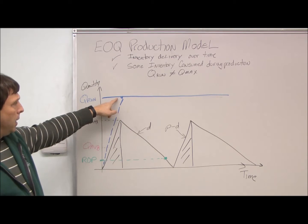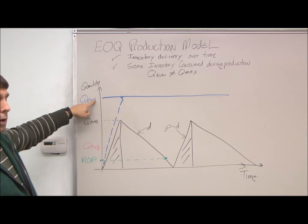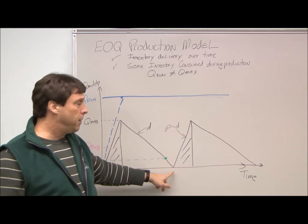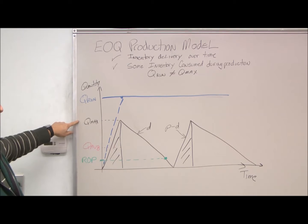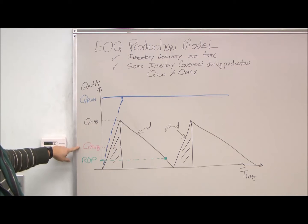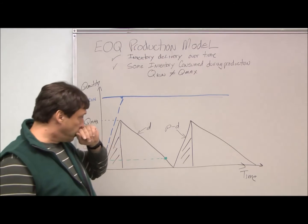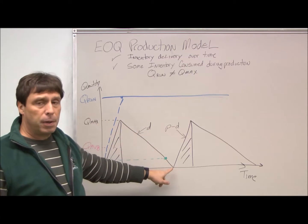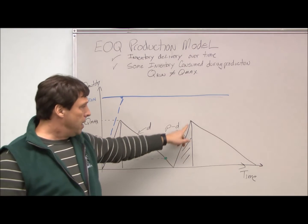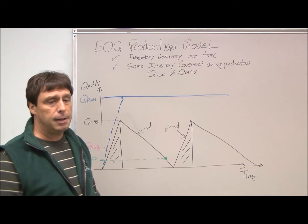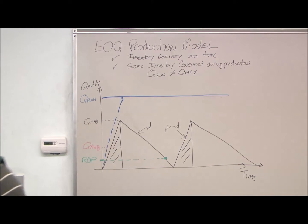If we were going to put all the inventory into production, we'd have Q-run here. But what actually happens is some of the inventory is used up while we're manufacturing it. So the maximum we'll ever have in inventory is Q-max. Our pesky accountants always want to find out what is our average inventory level so we can value it. And we're also going to introduce the reorder point. Our D here is the slope of the line, which represents our daily demand. And the slope of this line here is the daily production minus the daily demand.